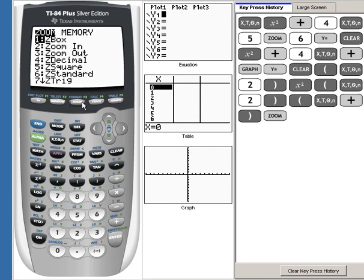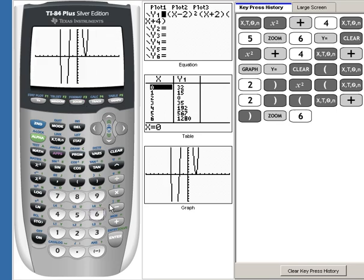Now if I do a zoom 6, which is our normal standard window, we see that we can't really see the whole entire graph. Well if you think about it, that makes sense because our y-intercept was way up here at 0, 32.